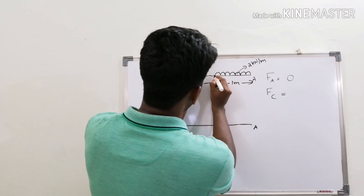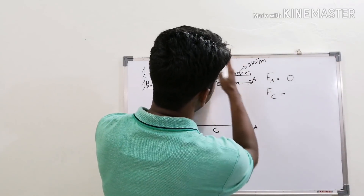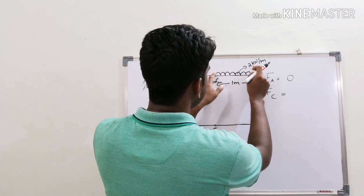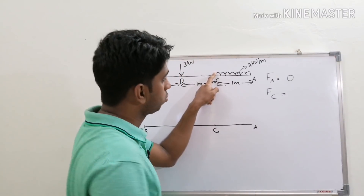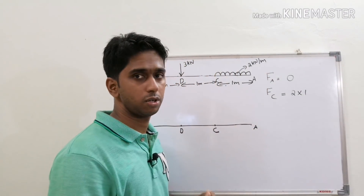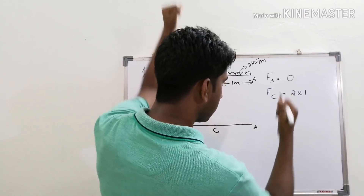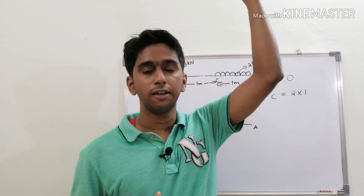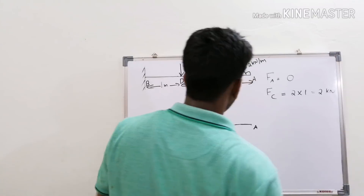To find shear force at C, we add all the loads acting to the right of C. To the right of C, we have only a UDL acting. The load intensity of this UDL is 2 kN per meter acting over a span of 1 meter, so the total load is 2 × 1. We also consider the sign convention — we are starting from the right side and the load is acting downward, so it is right downward, which is positive according to shear force sign convention. So the shear force at C is 2 kN.